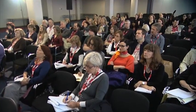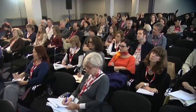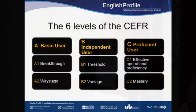I'll just give you a little bit of background explanation. These are the six levels of the Common European Framework on this slide. You can see we've got A, B, and C for basic, independent, and proficient user. For each of those, there are two sub-levels: A1, A2, B1, B2, C1, and C2.